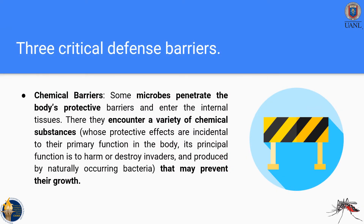There are three critical defense barriers in our immune system. The first is chemical barriers — some microbes that penetrate the body encounter a variety of chemical substances that may prevent their growth. The main function of these chemical substances is to harm or destroy invaders and they are produced by naturally occurring bacteria.